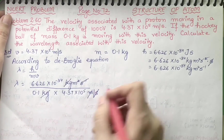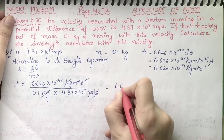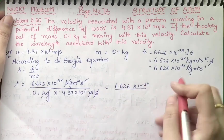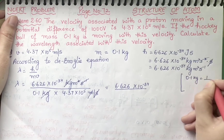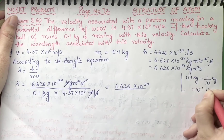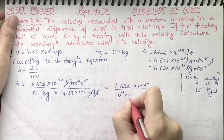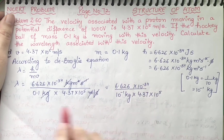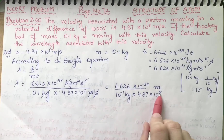Now simplify the values. 6.626 into 10 raise to power minus 34 divided by 0.1 kg — where 0.1 kg equals 1 by 10, which means 10 raise to power minus 1 kg. So we can write it as 10 raise to power minus 1 kg into 4.37 into 10 raise to power 5. Now we have the unit only in meter for wavelength. Simplify: minus 1 from 5 gives power of 4.